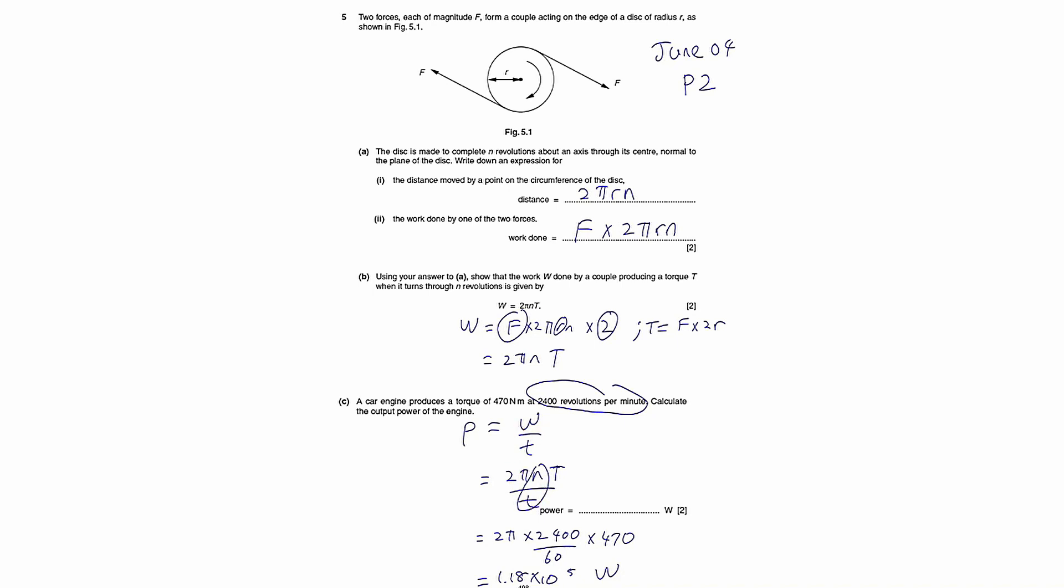In case you're wondering why they did not give you the time, the n over t here can be grouped together to form number of revolutions per unit time, which in this case is 2400 revolutions per minute. So this n over t is this.